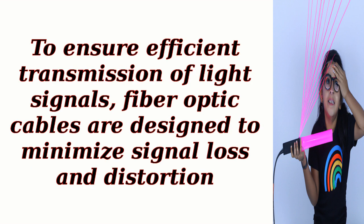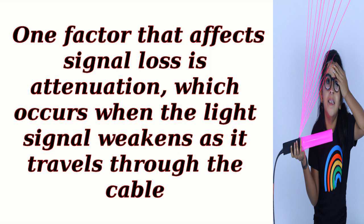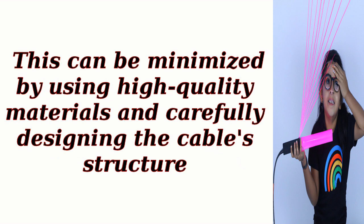To ensure efficient transmission of light signals, fiber optic cables are designed to minimize signal loss and distortion. One factor that affects signal loss is attenuation, which occurs when the light signal weakens as it travels through the cable. This can be minimized by using high-quality materials and carefully designing the cable's structure.